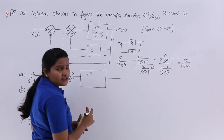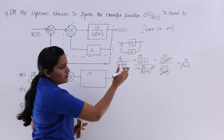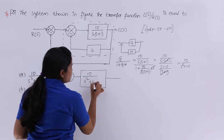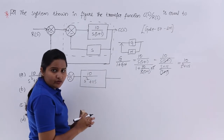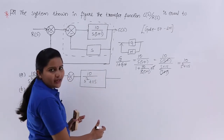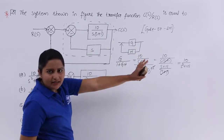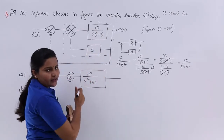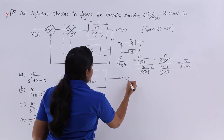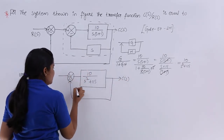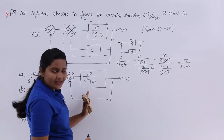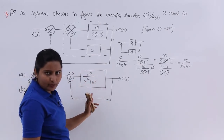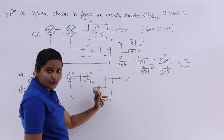In the GATE exam, there is no need to draw these diagrams — you can directly apply the formulas. For explanation purposes I am drawing the diagrams, but when solving yourself you can work directly with the formulas. Now the outer unity feedback loop remains with C(S), and the open-loop gain is now 10 divided by S²+11S. I will apply the same formula to this loop.